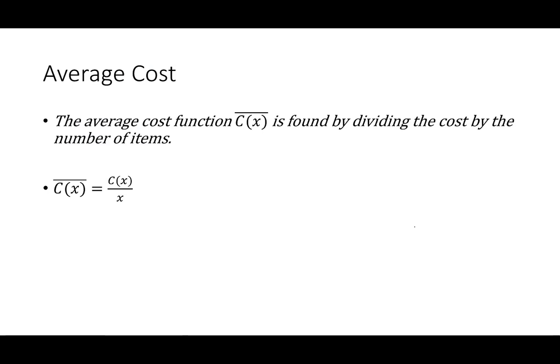Before we can do part B, we need to talk about average cost. The average cost function, C̄(X), is found by dividing the cost function by the number of items. So C̄(X) = C(X)/X. We're taking the total cost, dividing by how many items we made, and that gives us the average cost function.